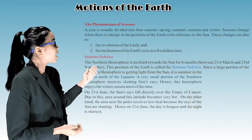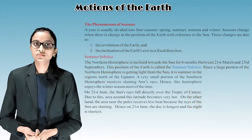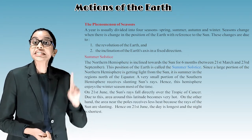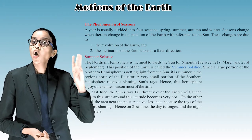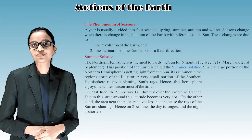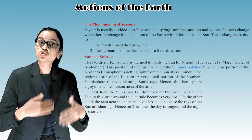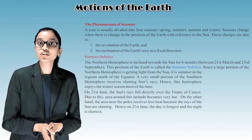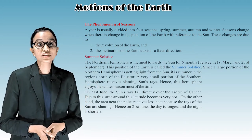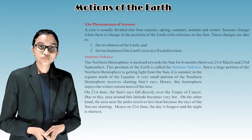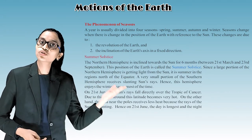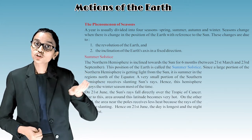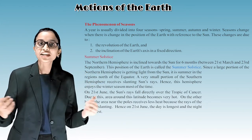A year is usually divided into four seasons: spring, summer, autumn, and winter. Seasons change when there is a change in the position of the earth with reference to the sun. These changes are due to, first, the revolution of the earth, and second, the inclination of the earth's axis in a fixed direction.